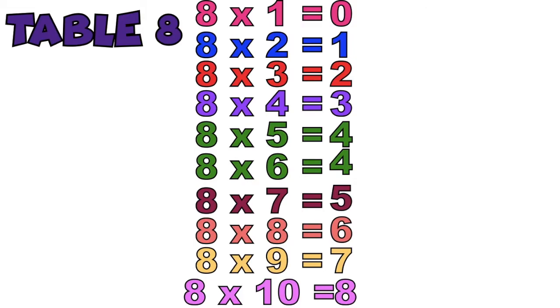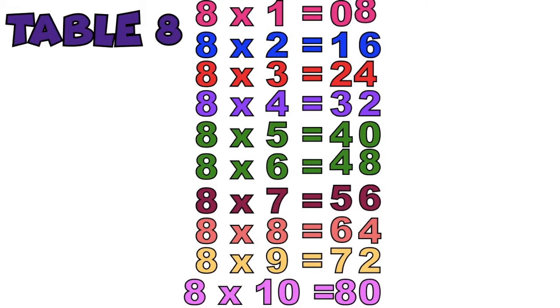Then, from the bottom, we're going to write 0, 2, 4, 6, 8. As you can see, we wrote skip counting by 2s started by 0 up to 8. Then, once we reach 8, we will write again 0, 2, 4, 6, 8. That's it! This is multiplication table 8.